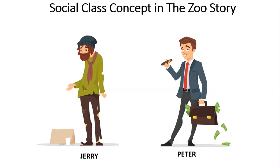The play takes place between two men, and we need to take a deeper look at them. We need to describe them in detail to understand the social class concept. Here we have Peter and Jerry. Peter is described in the play as a man in his early 40s who wears tweeds, smokes a pipe, and carries horn-rimmed glasses. Jerry is described as not poorly, but carelessly dressed. Through their conversation, there are things we can be sure of as readers or audience members of the play.